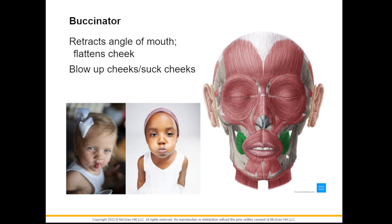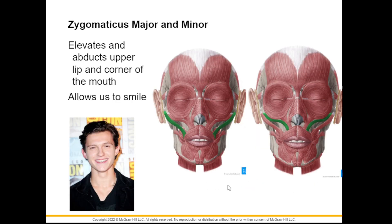The buccinator can pull our lips towards the sides as in smiling, and it can blow up or suck up the cheeks. Next we have the zygomaticus major and minor. The bigger one is your zygomaticus major and the smaller one is your zygomaticus minor. The job of your zygomaticus is to pull the angle of the mouth sidewards, and it allows us to smile, just like this image of Tom Holland.